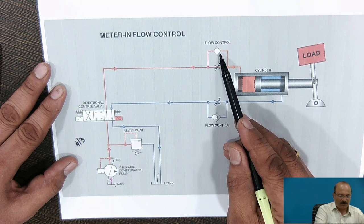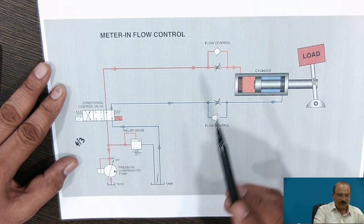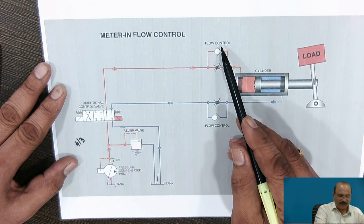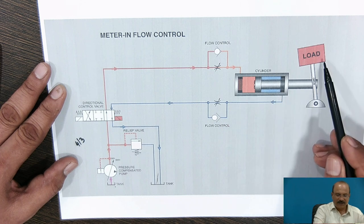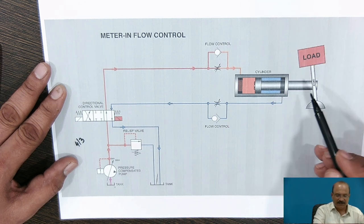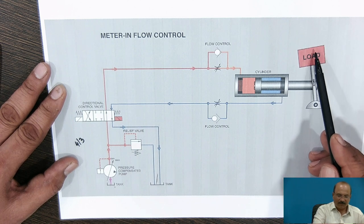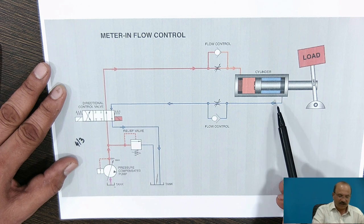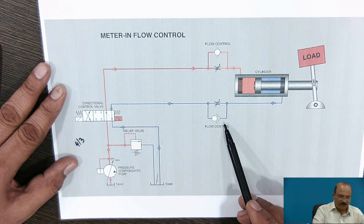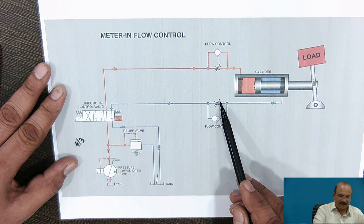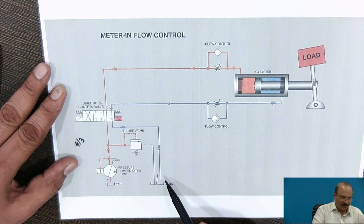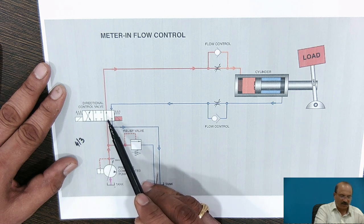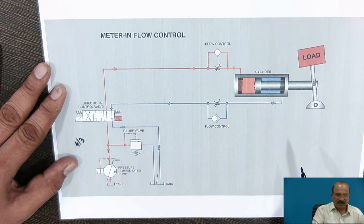Through the directional control valve, the flow is taken to the flow control valve. Here this path is restricted — there is no flow in that direction, only flow goes through this way. The flow is controlled here and then it enters the cylinder and piston arrangement. A load is provided on the piston, and the outlet flows back to the storage tank. So from the source — pump, directional control valve, flow control valve — it comes to the piston and cylinder arrangement.